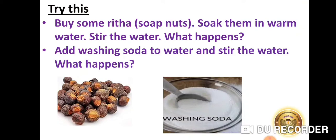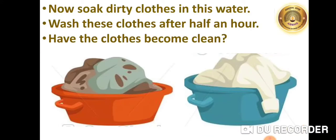The next activity — we can all try this at home. Buy some reetha, that's called soap nuts, as shown in the image. Soak them in warm water and stir the water. Then add washing soda to the water and stir. Now soak the dirty clothes in this solution you have just prepared. After preparing the solution, soak your dirty clothes in it for half an hour, and after half an hour, once you wash the clothes, you will find the clothes have become clean.